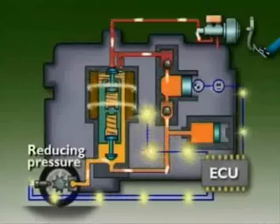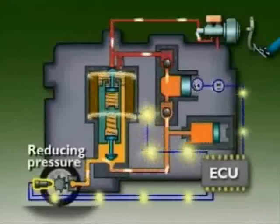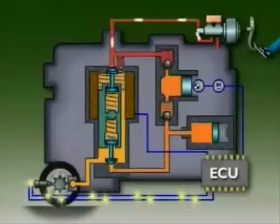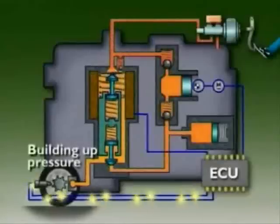If the sensors then signal that the lower pressure has allowed the wheel to speed up, the ECU stops all command current, which de-energizes the solenoid valve.